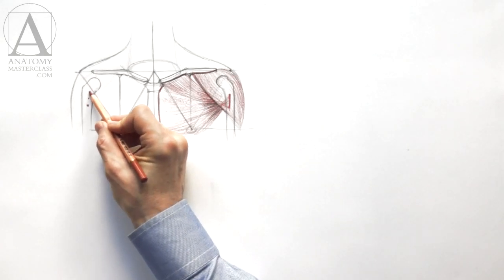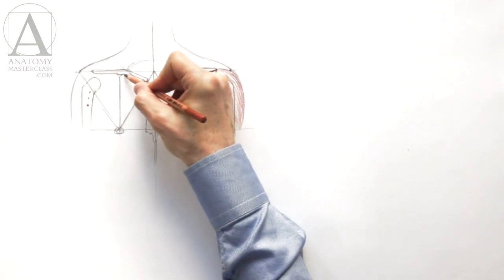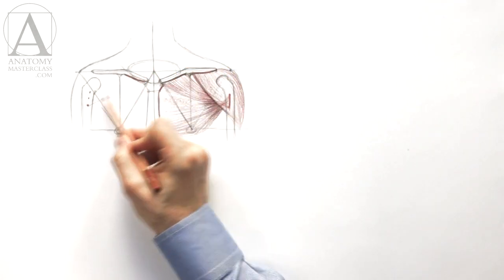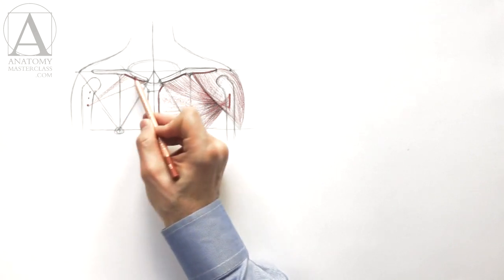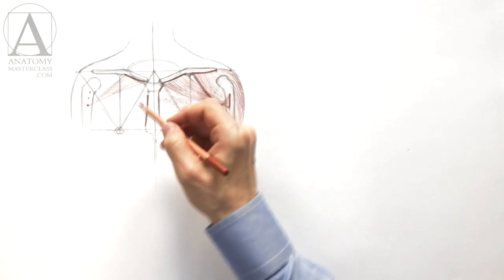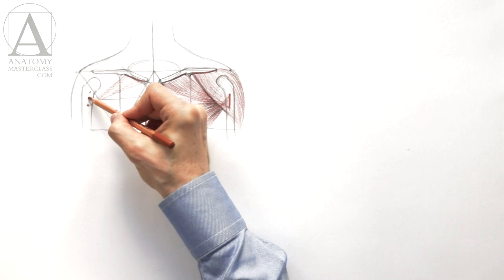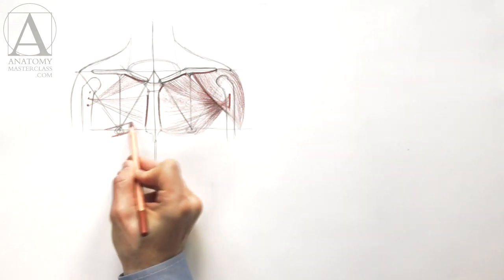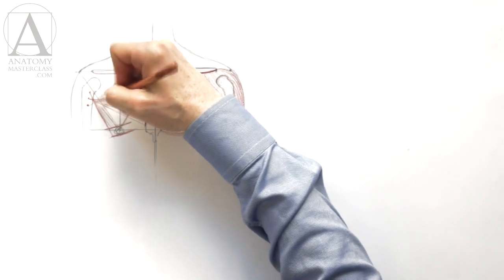I will indicate these three insertion points on another humerus. Once again, the clavicle portion goes from the inner half of the collarbone into the lowest point of insertion. The sternal or breastbone portion goes horizontally from the breastbone into the middle point of insertion. And finally, the lower portion of the breast muscle goes from the ribs to the top point of insertion.